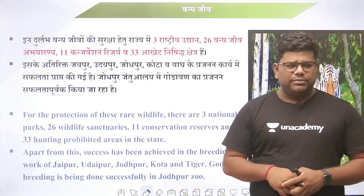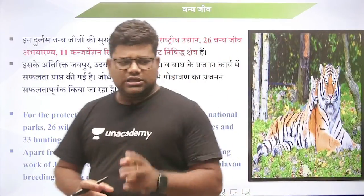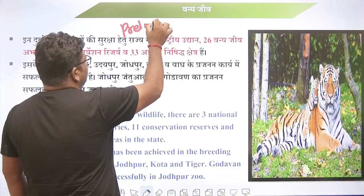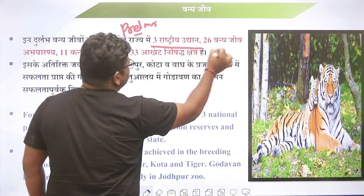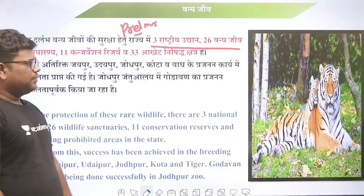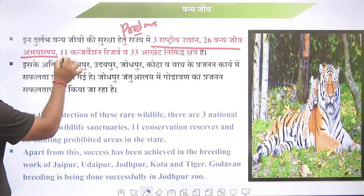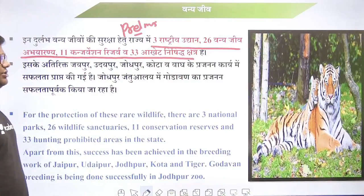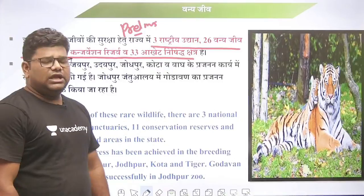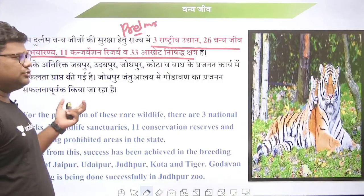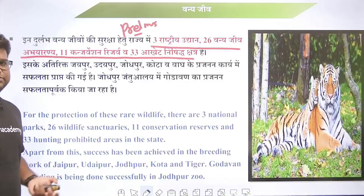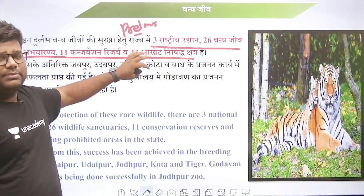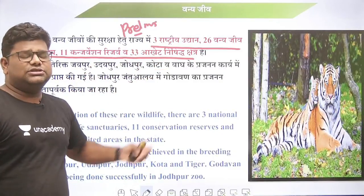थार मरुस्थल और अरावली की वजह से यहाँ बहुत जादा जैव विविधता है। भौगोलिक विविधता होती है तो वनों की विविधता भी है। शुष्क और मरुद्विद पौधों से लेकर आर्द्र और उपार्द्र पर्णपाती वन तक राजस्थान में मिलते हैं। सिरोही में डेढ़ सौ मीटर से जादा वर्षा वाले क्षेत्र में सदाबहार वन भी हैं। राजस्थान में 3 राष्ट्रीय उद्यान, 11 conservation reserves और 33 protected areas हैं।